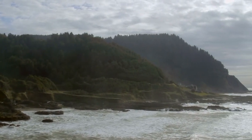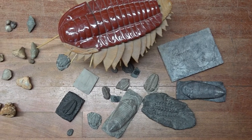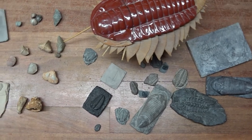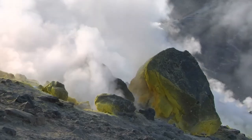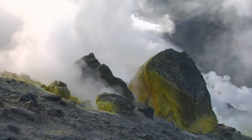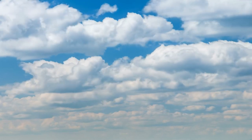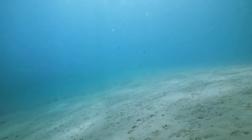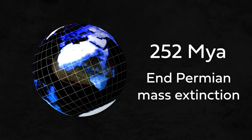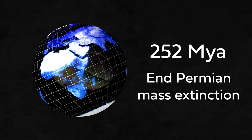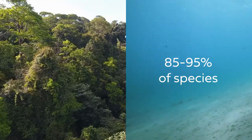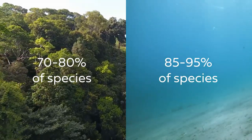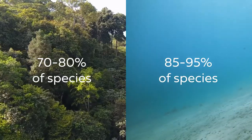In the first video of this series we told you about the catastrophic climate change event that happened 252 million years ago. Volcanic activity in today's Siberia covered an area the size of Australia and released vast amounts of CO2. As a result the atmosphere heated up rapidly and the oceans acidified and became depleted in oxygen. This culminated in the end-Permian mass extinction, during which between 85 and 95 percent of all species in the oceans and 70 to 80 percent of all species on land went extinct.